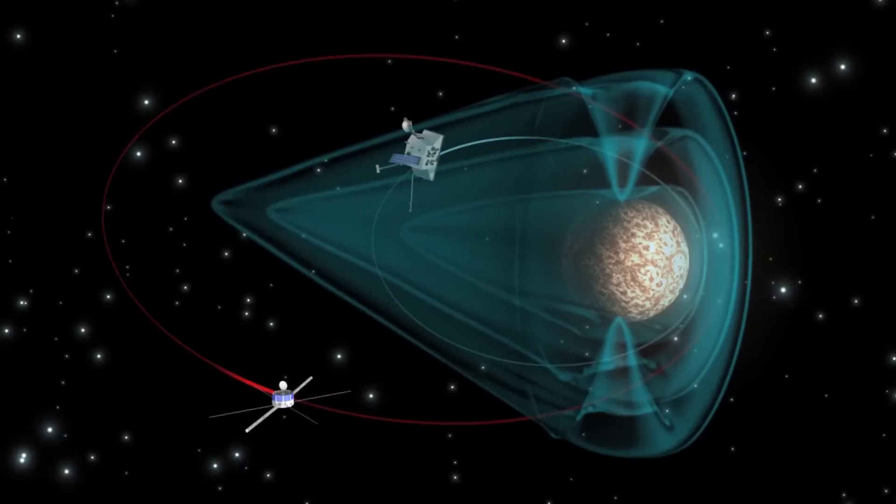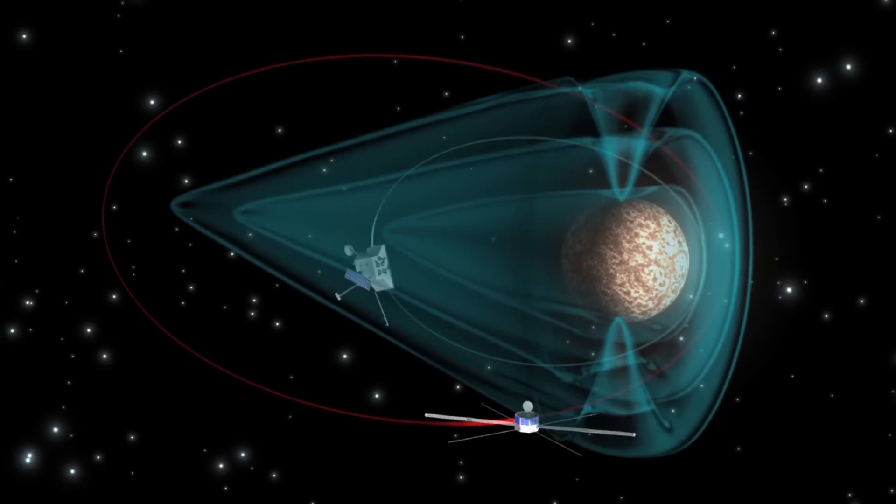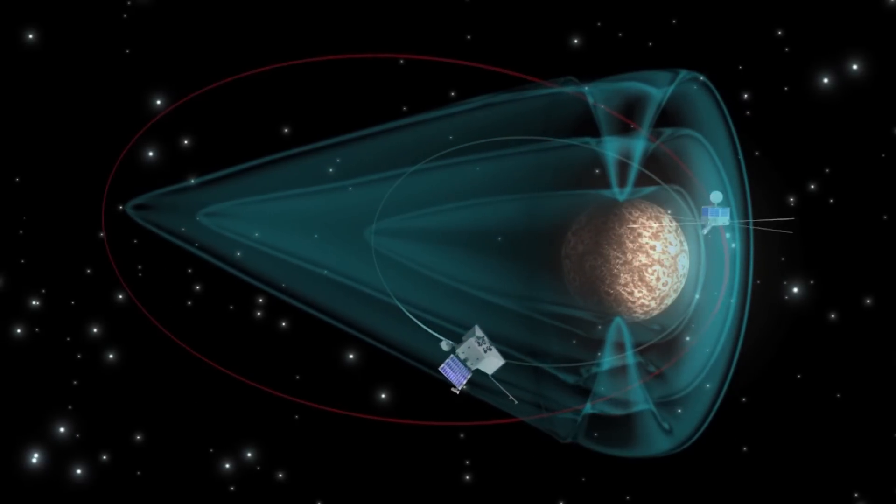What scientists want to do is try to understand the nature of the planet itself, what material is on the surface. We would like to measure temperatures. We would like to see the interaction with the solar wind. Then Mercury has a magnetic field which is like Earth, a dynamo field. We would like to understand that.